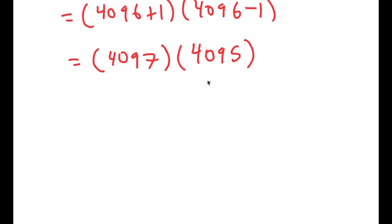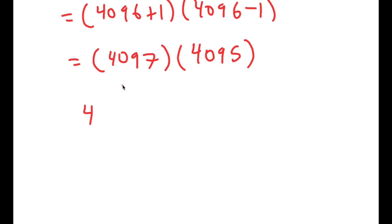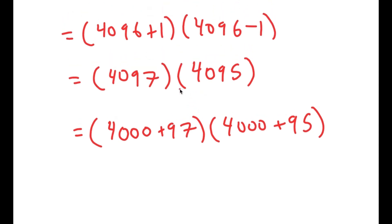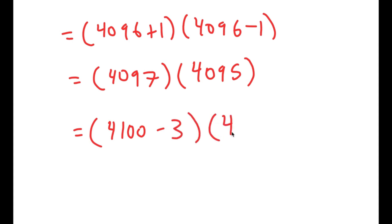Rather than basic multiplication, a better way to solve this is to rewrite as (4,000 plus 97)(4,000 plus 95). Or even better, rewrite 4,097 as 4,100 minus 3, and 4,095 as 4,100 minus 5, giving (4,100 minus 3)(4,100 minus 5). Notice that we now have 3 times 5, which is much easier to work with than 97 times 95. I'll distribute by expanding this expression.